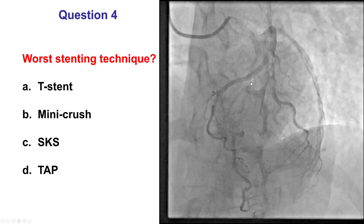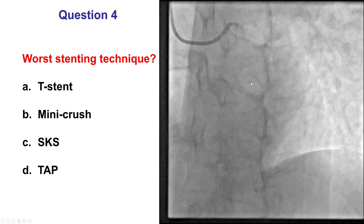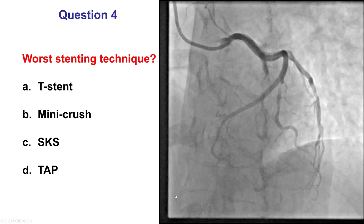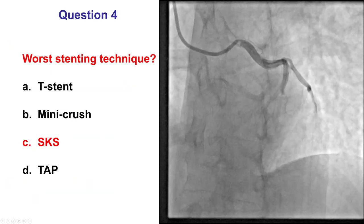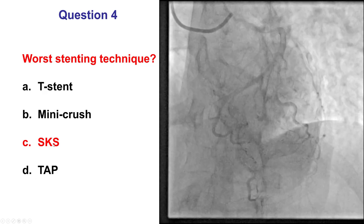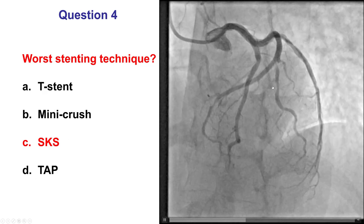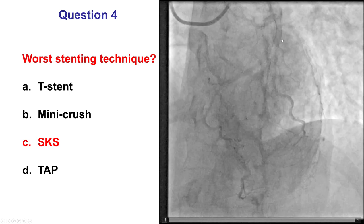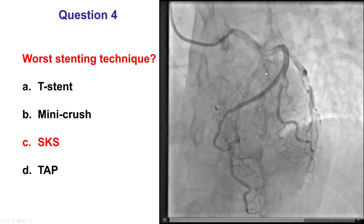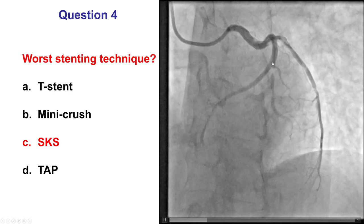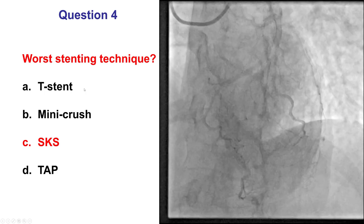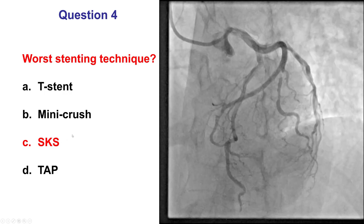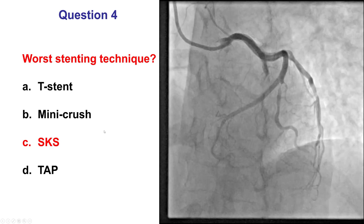The next question is: what is the worst stenting technique for this patient? In my opinion, the worst stenting technique is the SKS, or Simultaneous Kissing Stents. The reason is that when two metal barrels are placed next to each other, a new carina is formed, and it is very hard to advance equipment — wires, balloons, and stents — through this. Simultaneous Kissing Stent should ideally only be done in cases of emergency, because it is a fast technique.